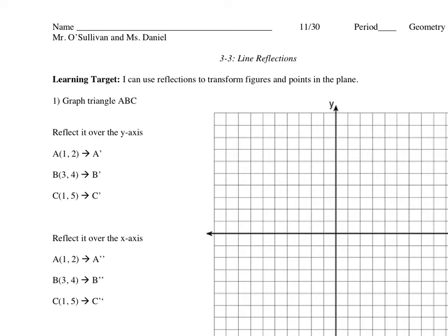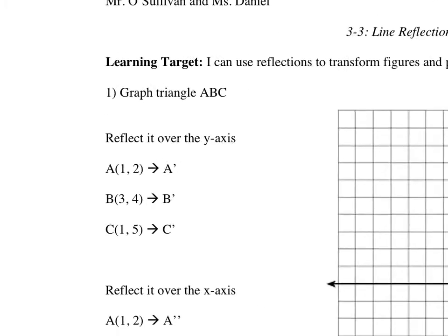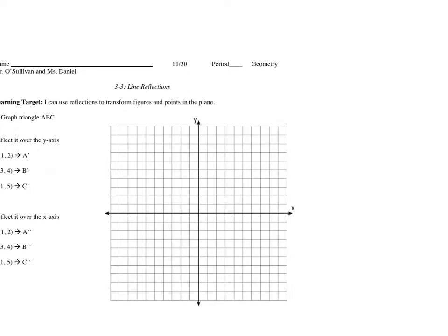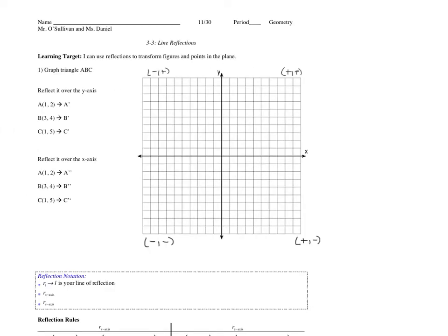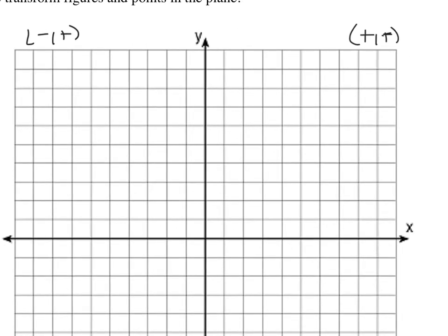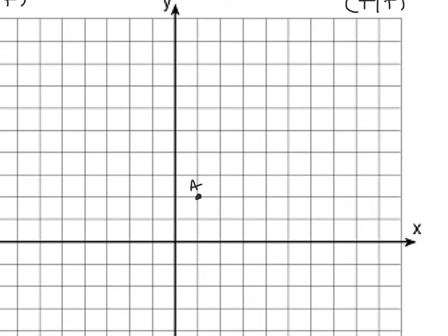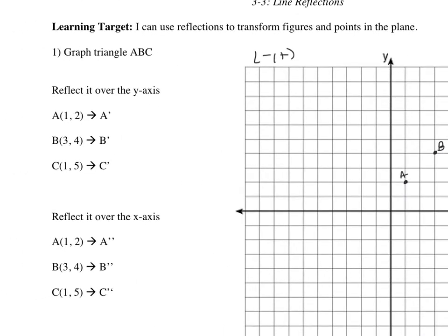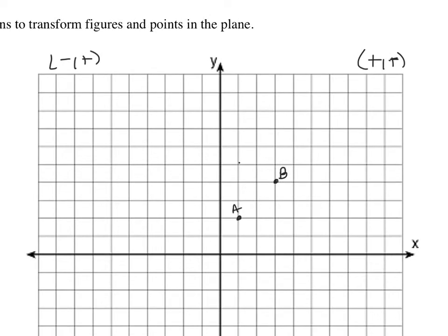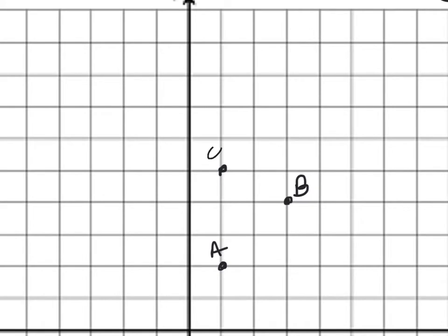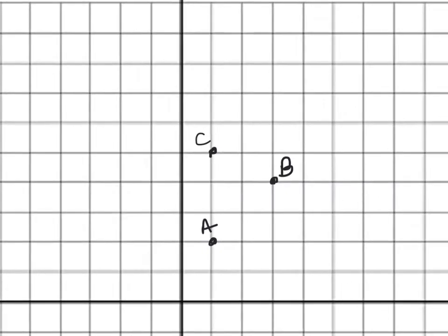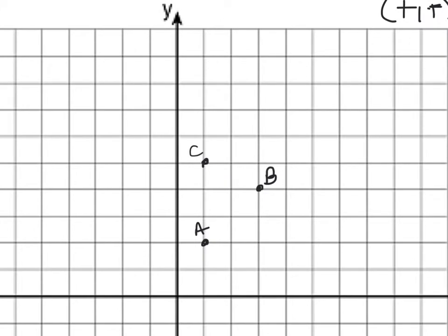The first thing we're going to do is — if you have this printed out — I want you to graph triangle ABC. I'm going to graph it right now, but before I begin I'm going to put the quick little note that Ms. Kimmick does. She always puts those labels above our quadrants so we know exactly which direction we should travel in. I'm going to plot A at (1, 2), B at (3, 4), and C at (1, 5). Now I'll connect them with nice straight lines — use your MetroCard, your ID, whatever — to connect your lines.